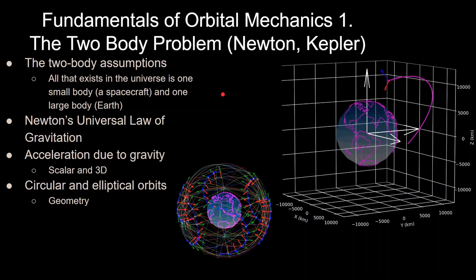Then we'll get into Newton's Universal Law of Gravitation, and then we'll also get into Newton's First Law and how to apply that to get the acceleration due to gravity of an orbiting body in the scalar form and in the 3D form, and then we'll get a little bit into circular and elliptical orbits at the end.